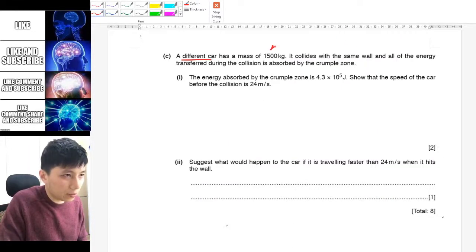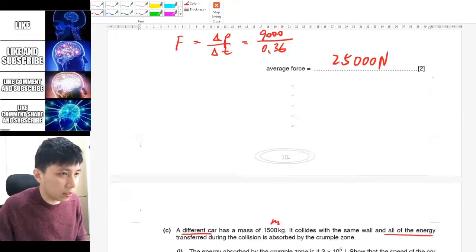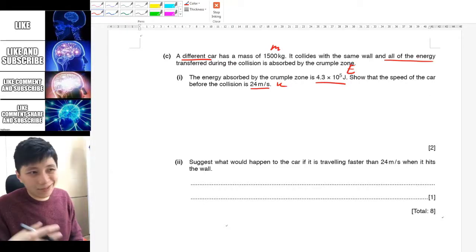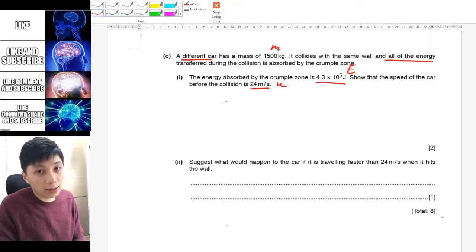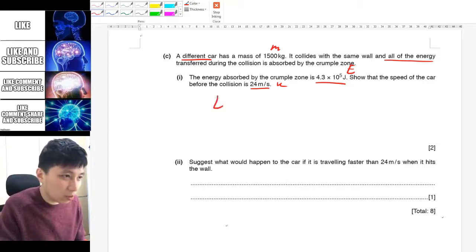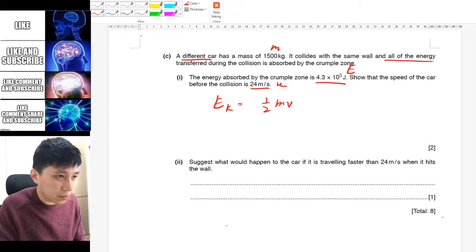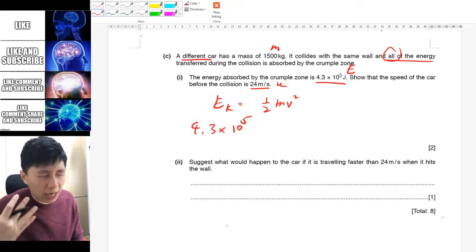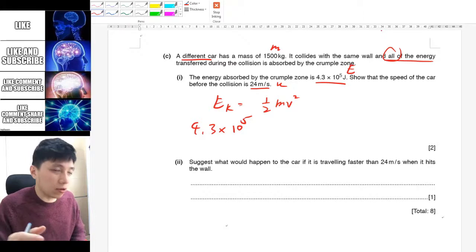Part C tells you there is another car with the same mass that collides with the same wall with all the energy absorbed by the crumple zone. So crumple zone means like the car would crumple at the front. So the energy absorbed by the crumple zone is this one. This is energy. Show that the speed before collision is this one. So nothing to do with momentum. But then it's linked to energy that you learn. And it's very common in the past papers actually that they link these two together. Because they are really relevant together.